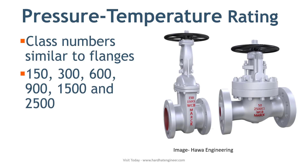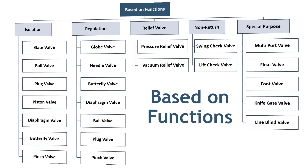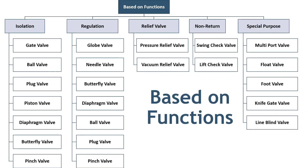Classification based on functions. Valves have various functions within the piping system, such as stopping and starting of fluid flow, throttling of fluid flow, controlling the direction of flow or pressure within the piping system, and relieving pressure or vacuum from the piping system. Different types of valves are used to serve these functions. This chart shows the classification of valves based on functions.